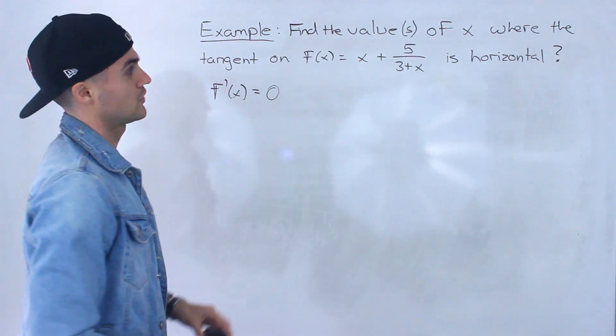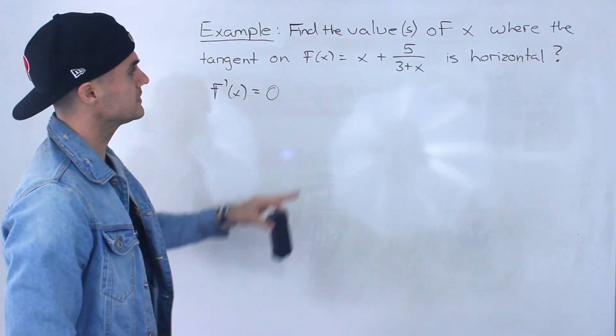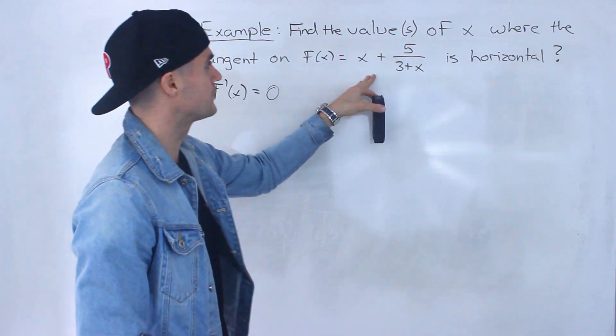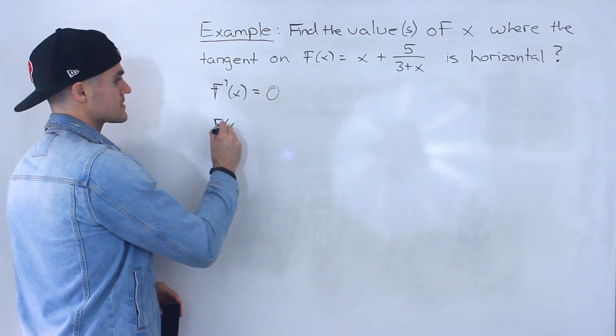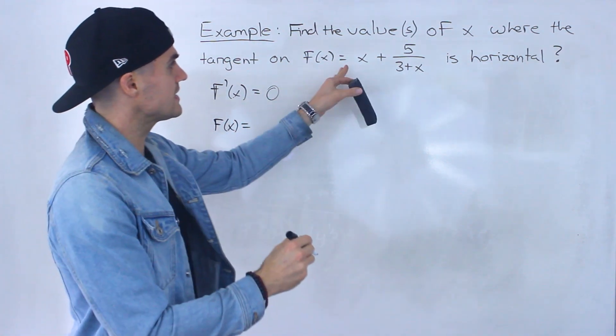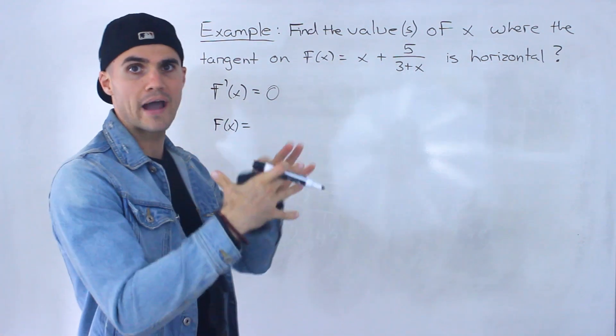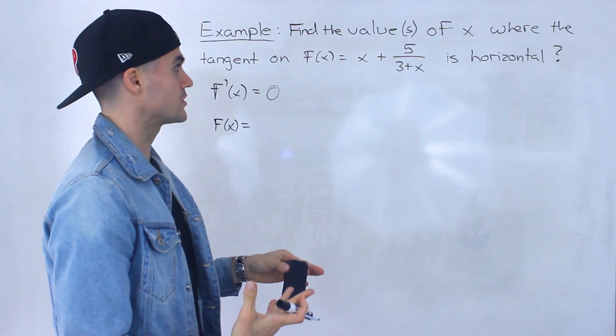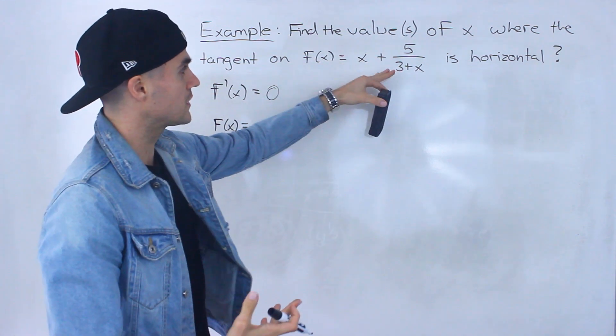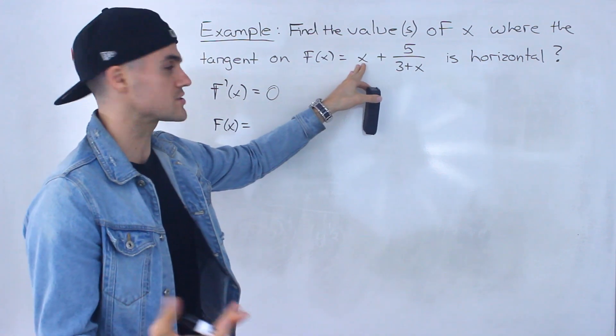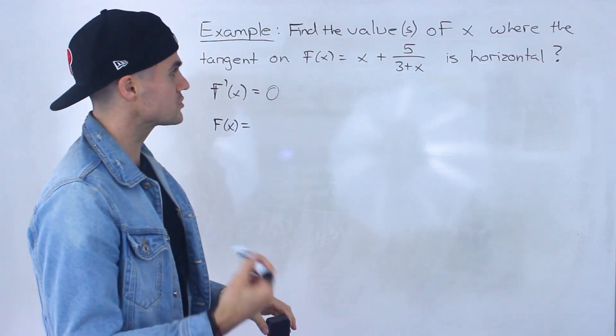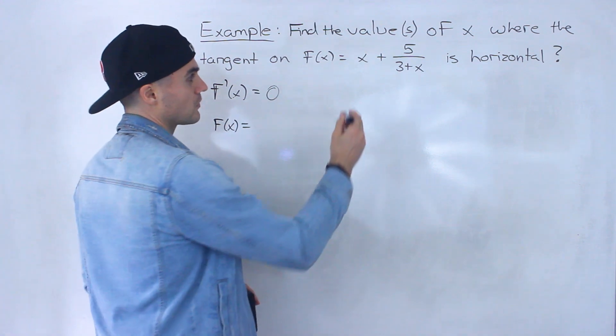So we have to take the derivative of this function over here. Now we can take the derivative from here, but what I actually recommend doing is taking these two terms here and combining them into one fraction. So you could get the derivative from here and then apply the quotient rule on this term. The derivative of x is just going to be 1, but personally what I'm going to do is combine them into one fraction.